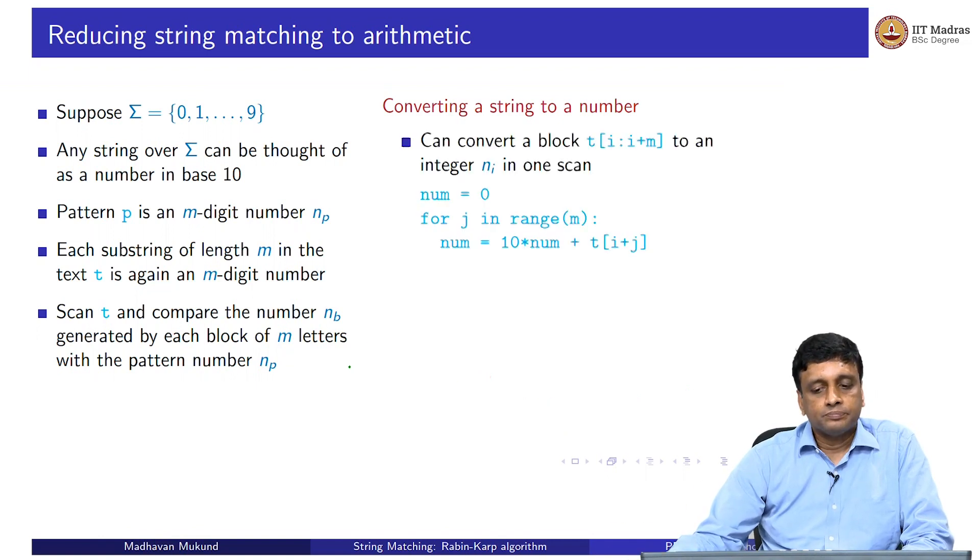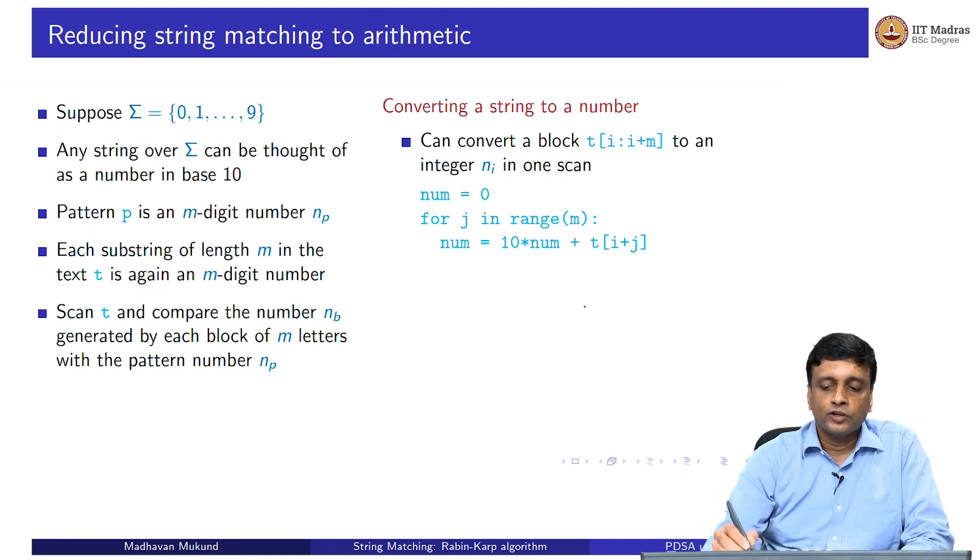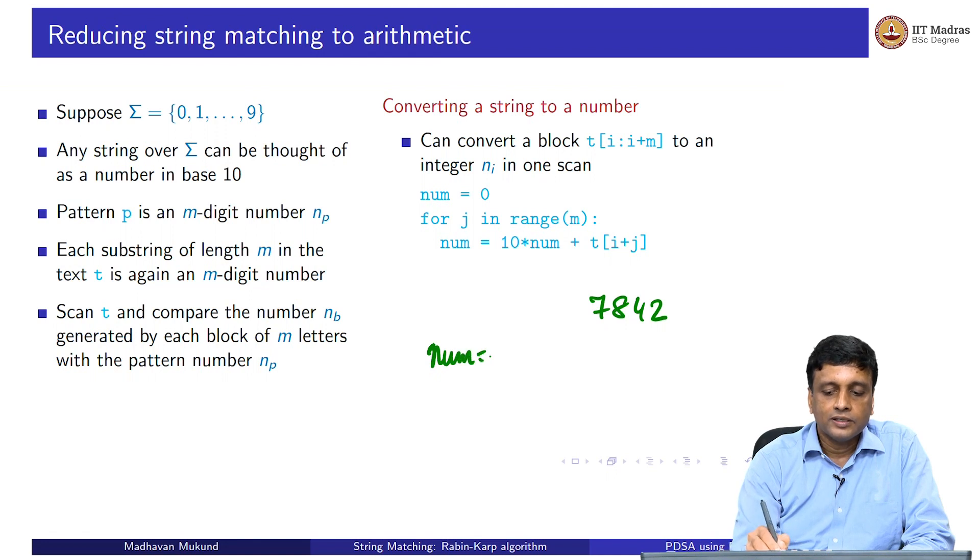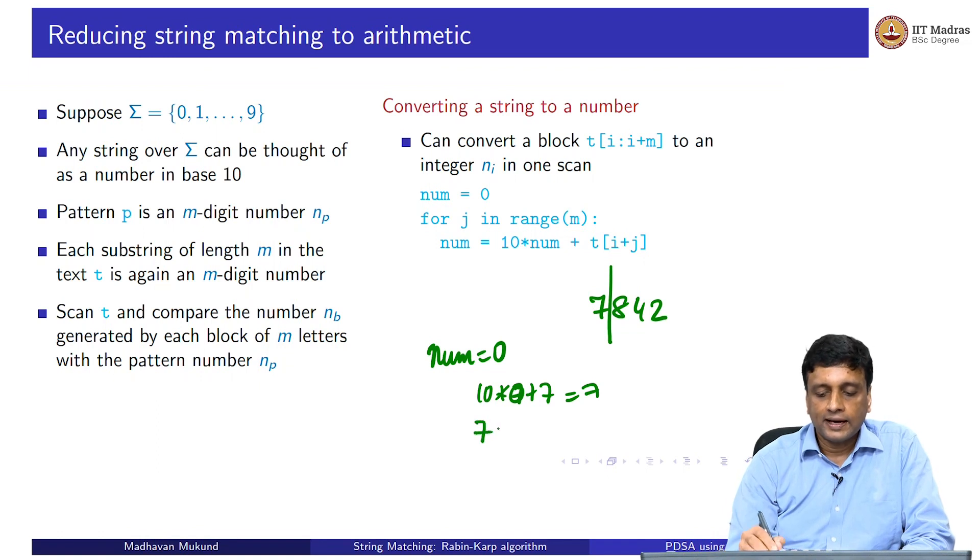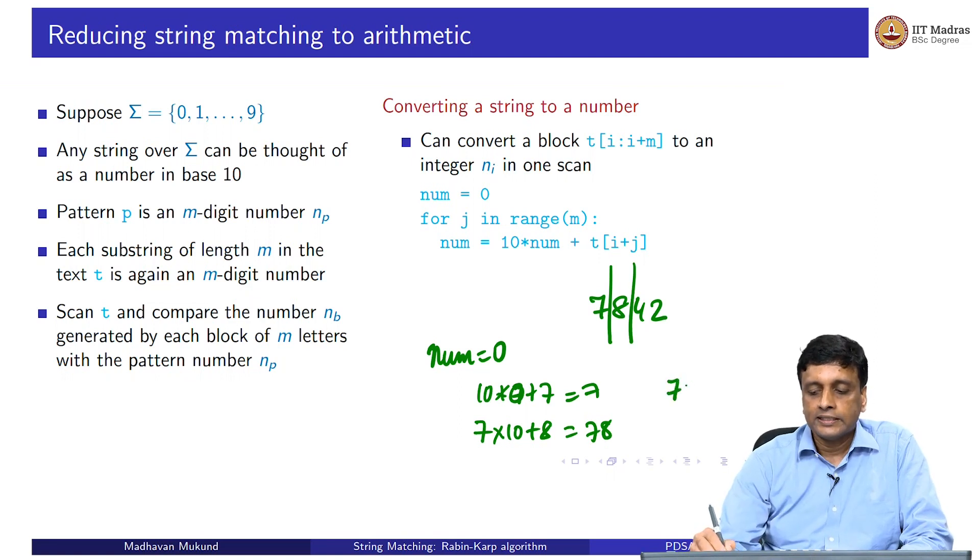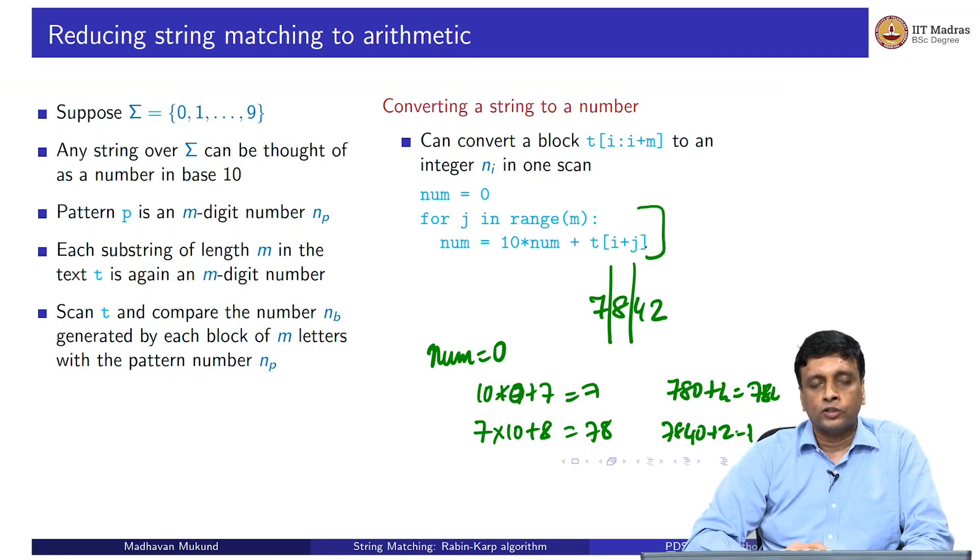How do we convert a string to a number? Fortunately, this is not difficult to do. We can go left to right and incrementally compute it. For instance, if my string is 7, 8, 4, 2, then I will start with saying my number is 0, then I will take 7, 10 times 0 plus 7. I will get the number corresponding to the first digit. Then I will take my current number 7 times 10 plus 8, and I will get 78 corresponding to the first two digits, and so on. From 78, I will get 780 plus 4 is 784. And then I will get 7840 plus 2 is 7842.